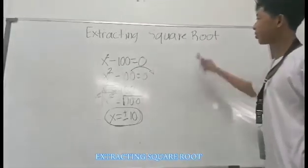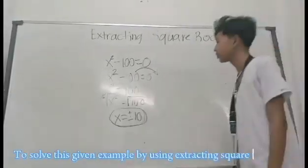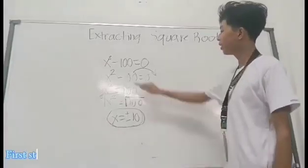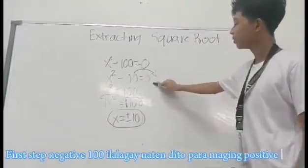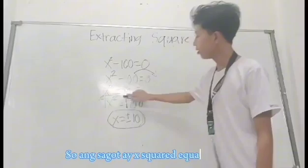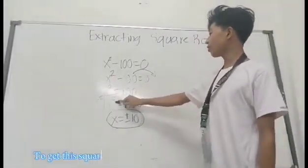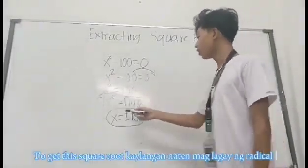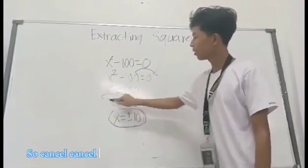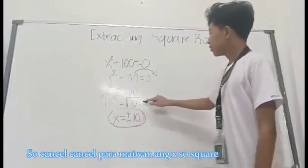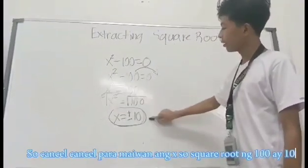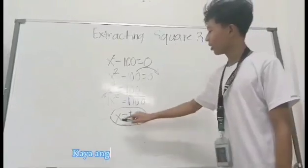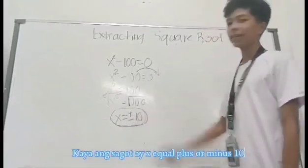Extract the square root. So this given example using extract the square root. First, negative 100, we'll transfer it here to make it positive. So the answer is x squared equals 100. So get the square root, we need to add the radical, cancel-cancel to have x. So we have x equals plus or minus 10.